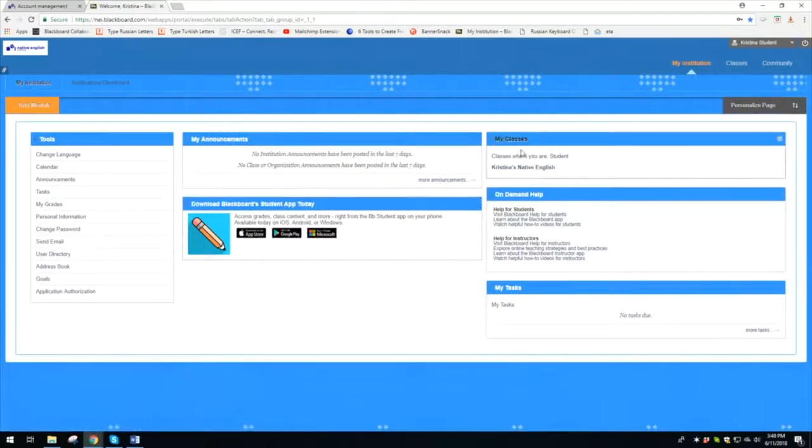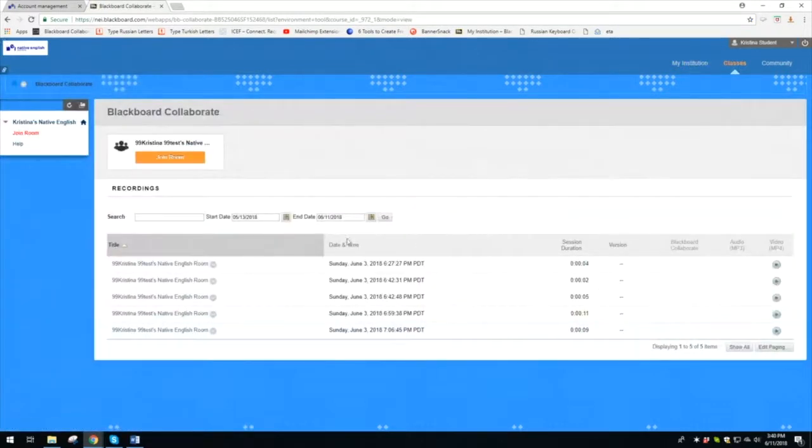Go to my classes and click on your class. Underneath the orange join room button, you will see all of your recordings.